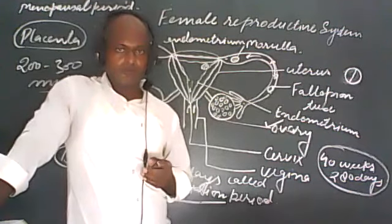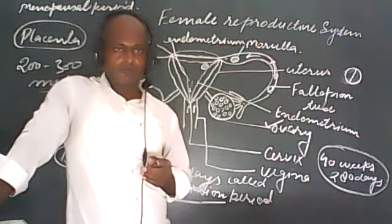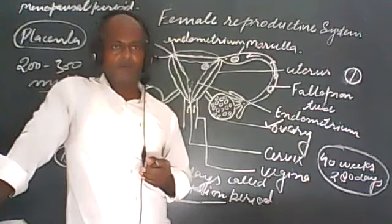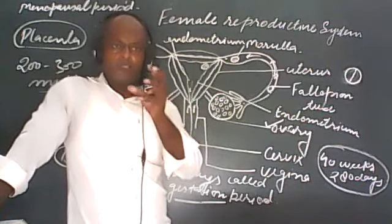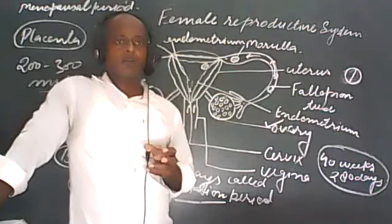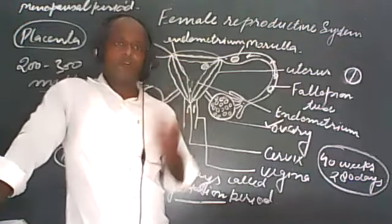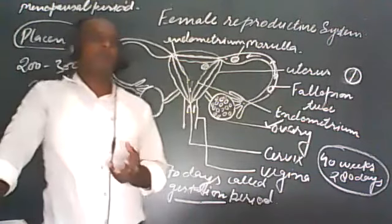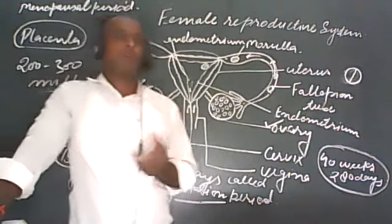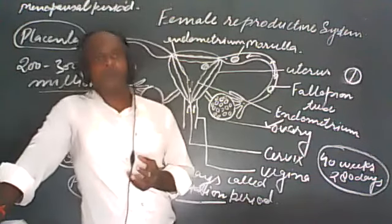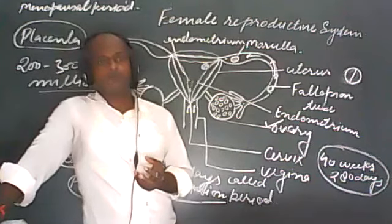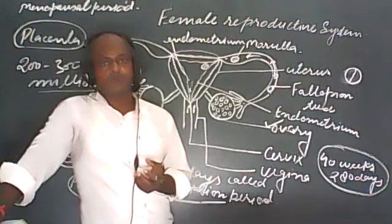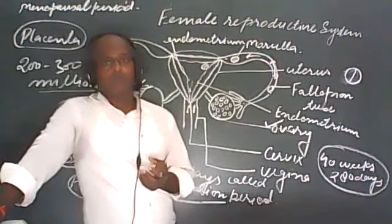A student asks: is the placenta also known as the umbilical cord? The teacher explains: the placenta is a structure in which the infant is safe and gets nourishment from the blood of the mother.